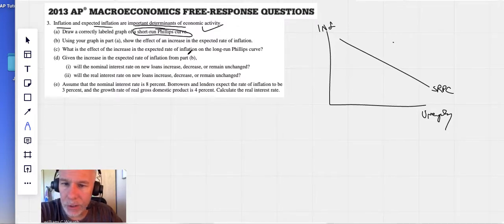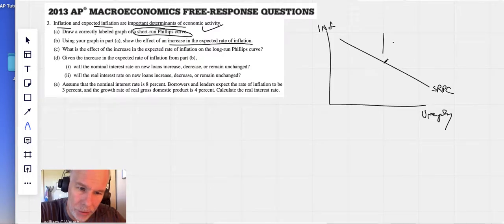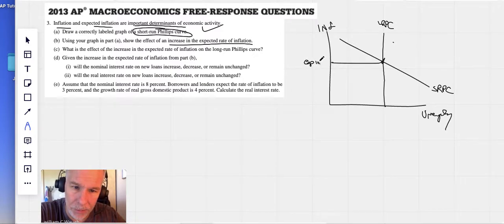Number two, using the graph in part A, show the effect of an increase in the expected rate of inflation. So recognize that if we were to draw a long run Phillips curve in here, what we know is where long run and short run come together. That is your expected inflation rate right there. This is our natural rate of unemployment right there. So the only way to get an increase in your expected inflation rate, an increase of where these two meet, is to...